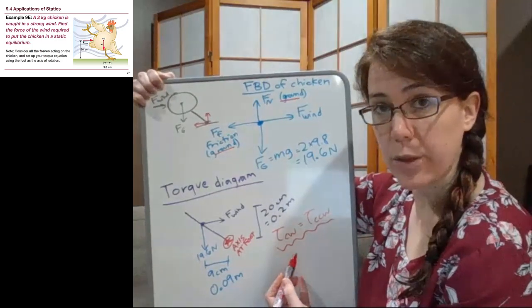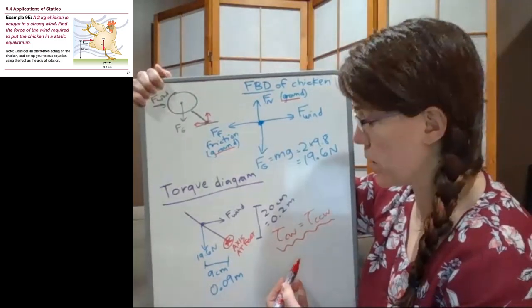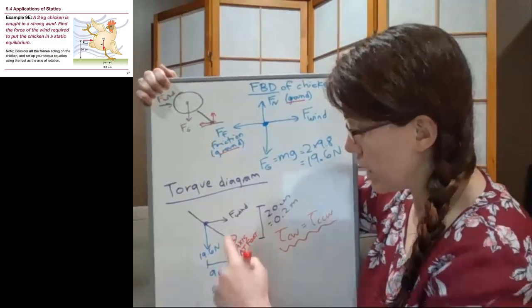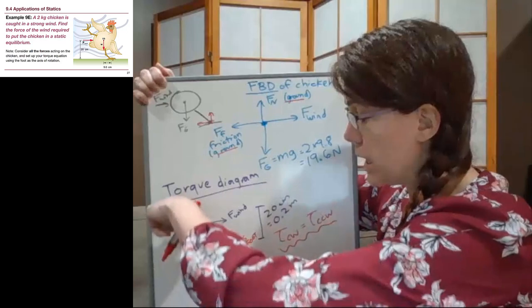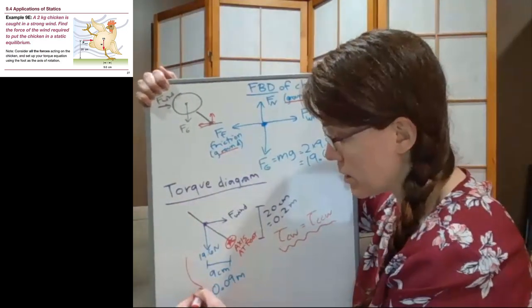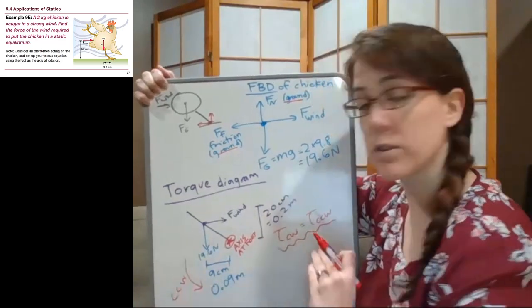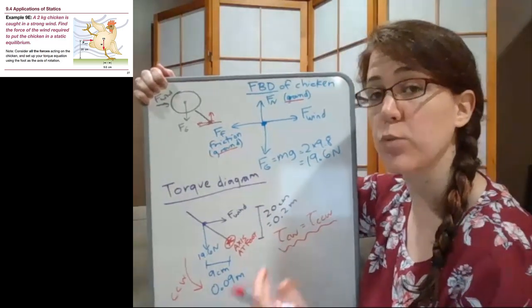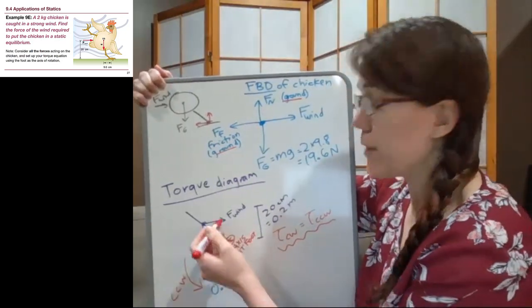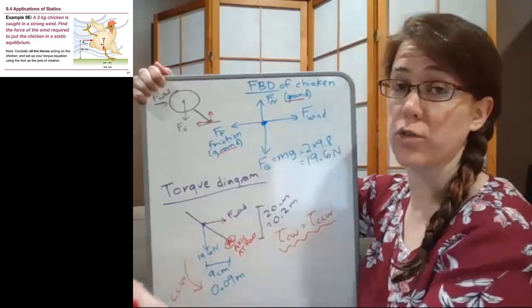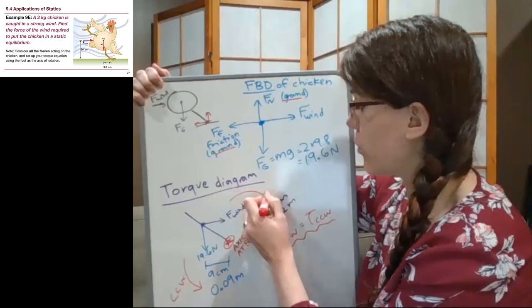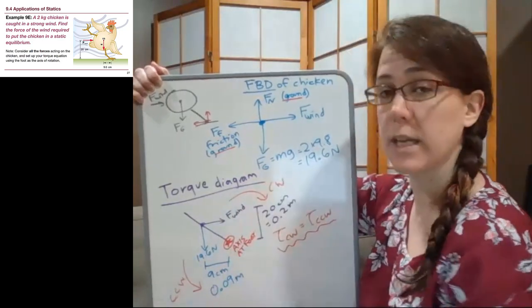We are still having to think about what clockwise and counterclockwise means relative to this axis, and it is still somewhat straightforward. If we look at where the axis is, this downward force from gravity is trying to rotate the chicken counterclockwise. If the wind suddenly cut off, that chicken would rotate counterclockwise, it would fall over onto the ground. And if the wind got a lot stronger so that we were no longer in static equilibrium, it would blow the chicken over and cause it to rotate clockwise.